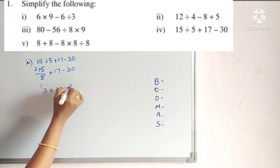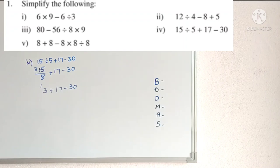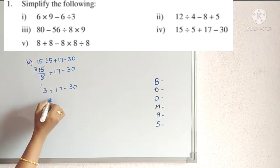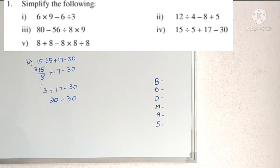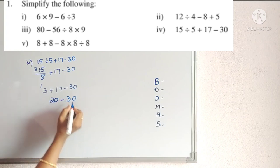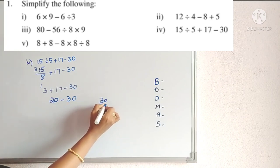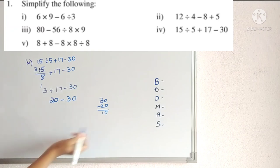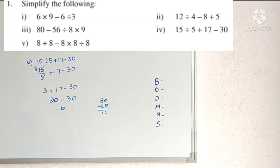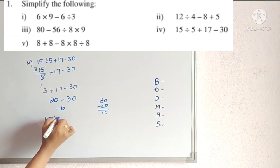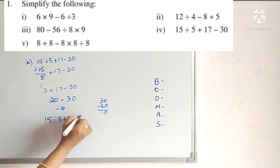Now addition and subtraction. First do addition: 17 + 3 = 20. Then 20 − 30: subtract small from big, 30 − 20 = 10, and the sign before the big number is minus, so the answer is −10. So 15 ÷ 5 + 17 − 30 = −10.